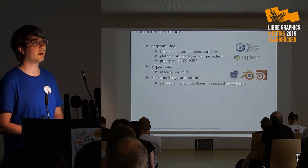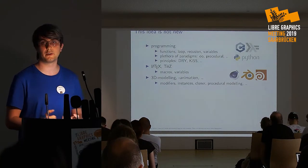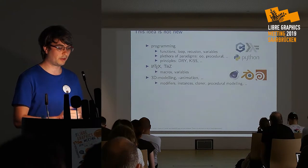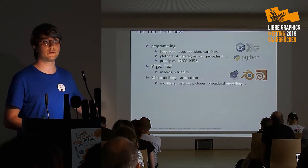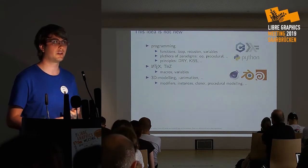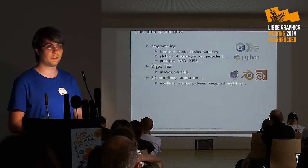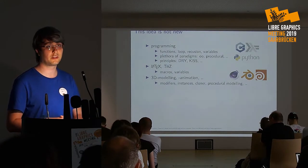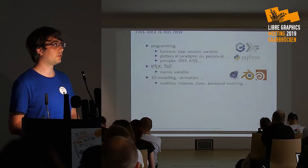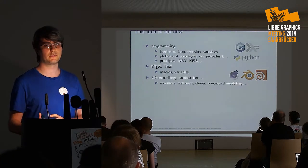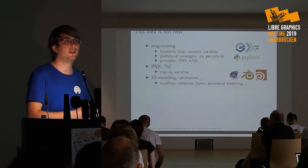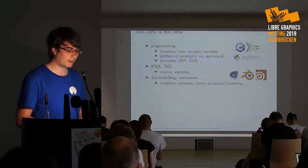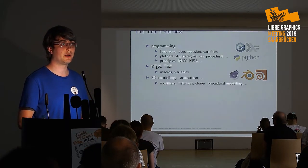This idea is not new. In programming, we have paradigms: functions, loops, recursion, variables, and a lot of other things which we use to structure and reuse our code. We have a plethora of paradigms — object orientation, procedural programming, functional programming. And much more importantly, we have positive and negative principles. The most important positive principles are: don't repeat yourself (DRY) — we don't want to copy-paste code because if we want to fix a bug, we have to do the same thing in multiple places — instead we put it in a function. And the KISS principle: keep it simple and stupid. Simple things are better than complicated things.